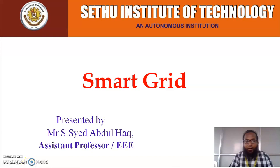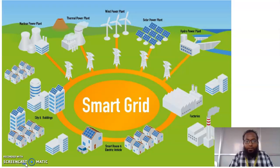Smart grid plays a vital role in all the power consumption as well as power energy system areas. It completes the work in a very effective as well as quick manner, which is why it is called smart. The power is generated by means of nuclear power plant, thermal power plant, wind power plant, solar power plant, and hydro power plant. These are all the resources of power generation in smart grid.